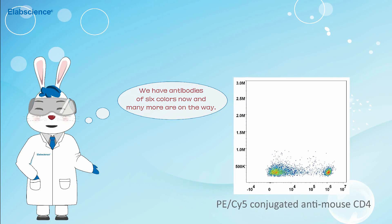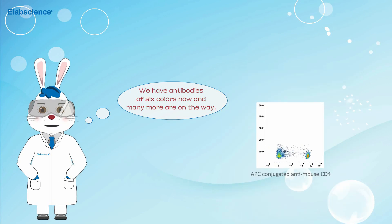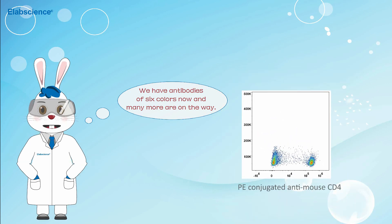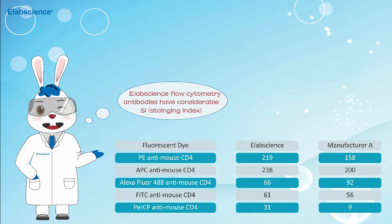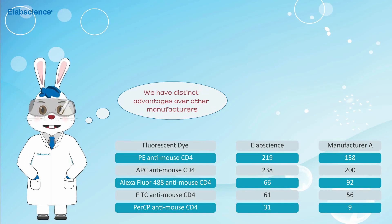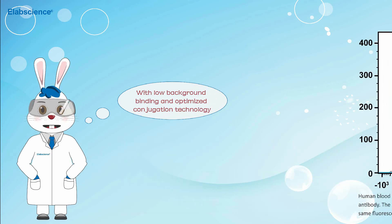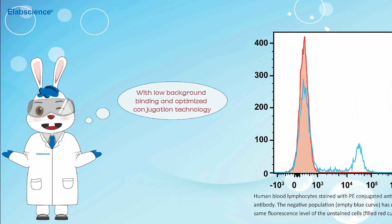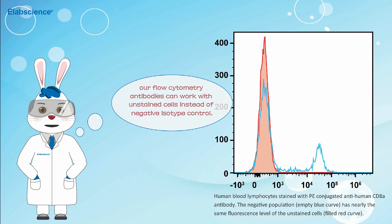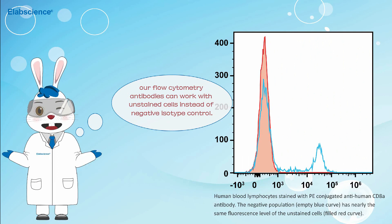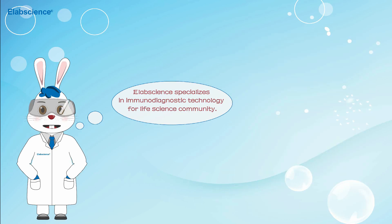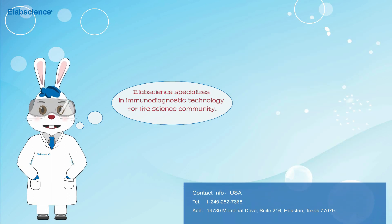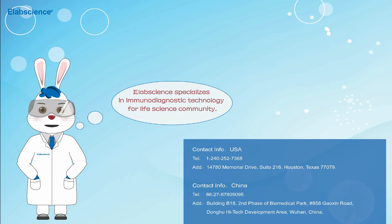We have antibodies of 6 colors now and many more are on the way. E-Lab Science flow cytometry antibodies have considerable SI, and we have distinct advantages over other manufacturers. With low background binding and optimized conjugation technology, our flow cytometry antibodies can work with unstained cells instead of negative isotype control.